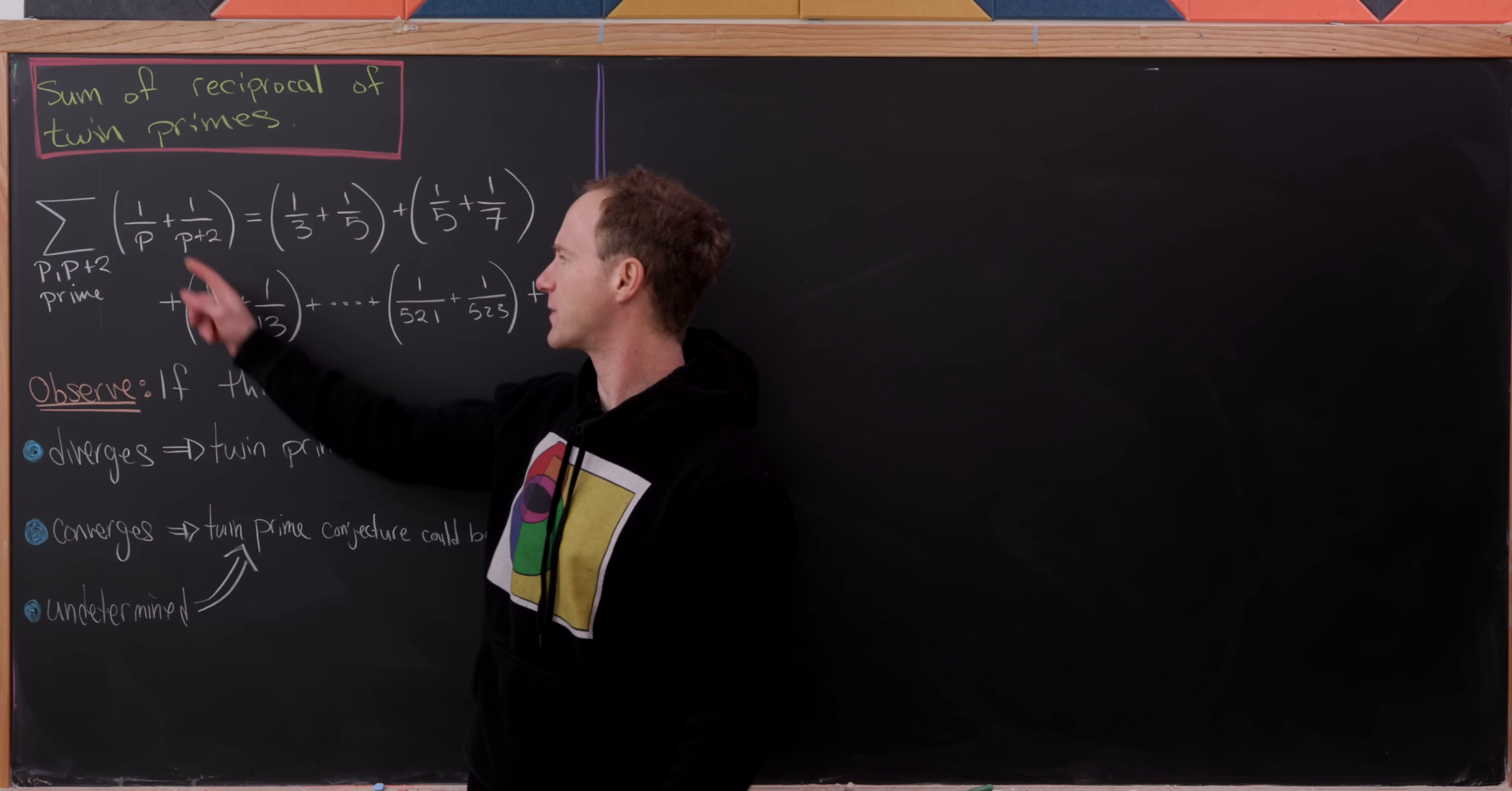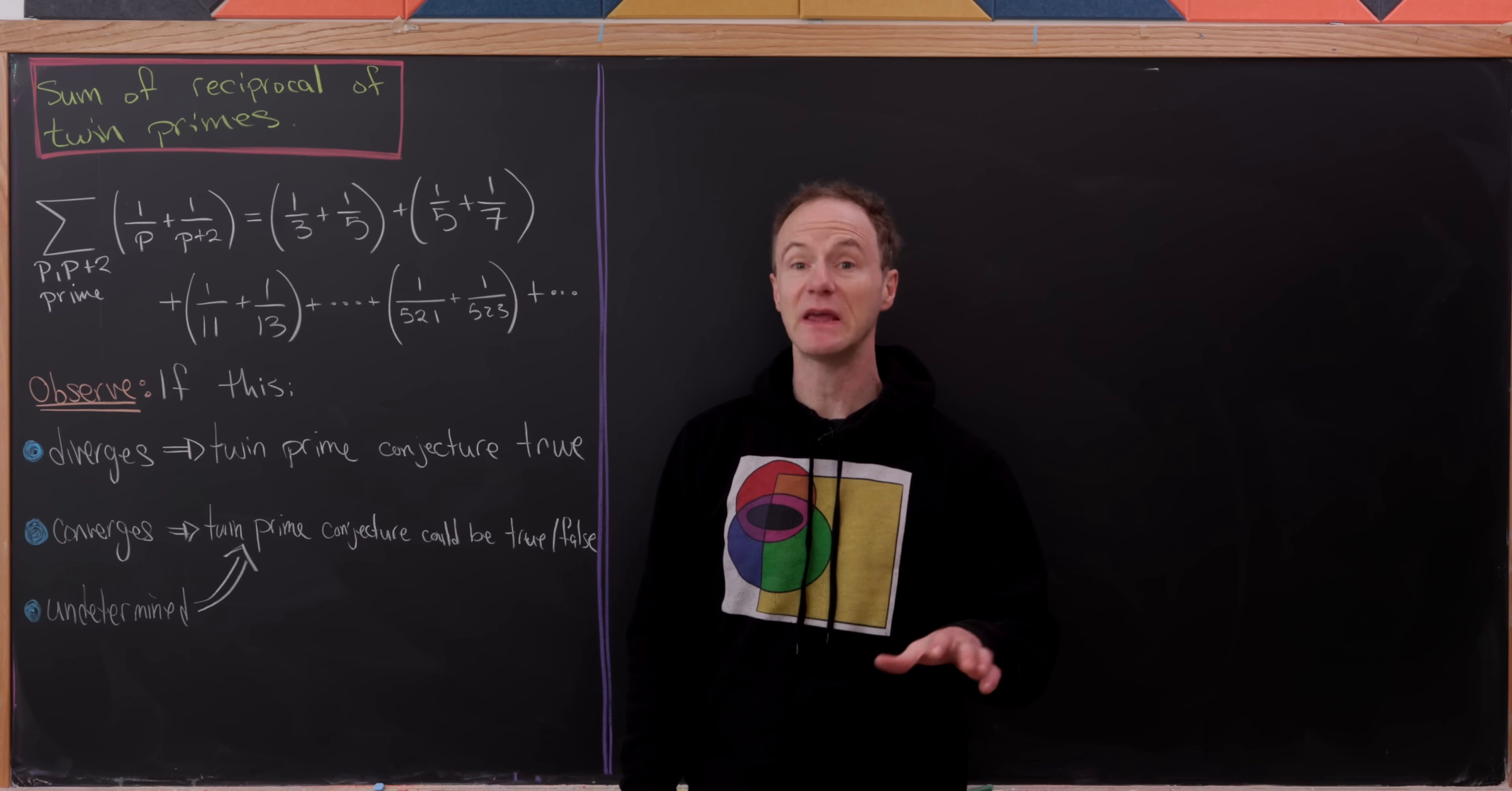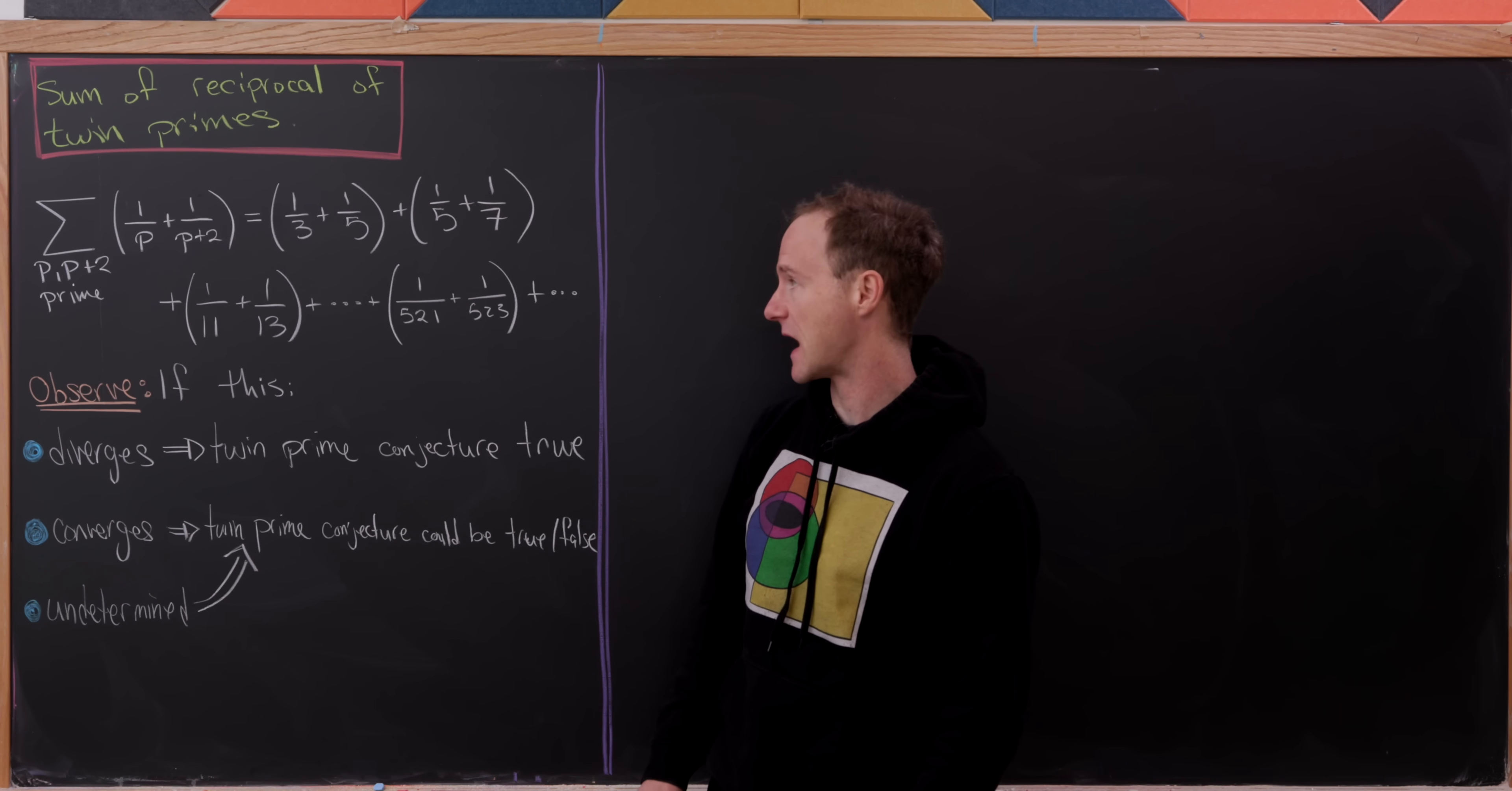To write that up carefully it would go something like this. We're summing over all numbers p so that p and p plus 2 are prime. In other words, p is the start of a twin prime pair.